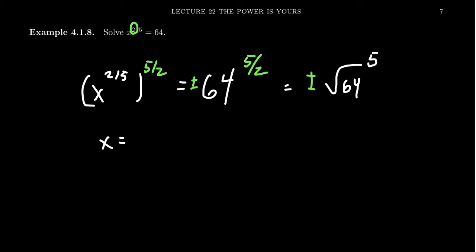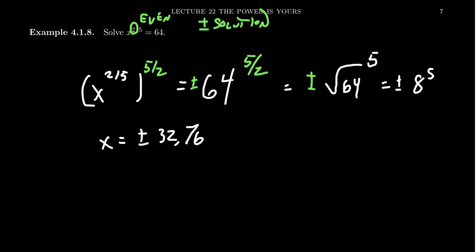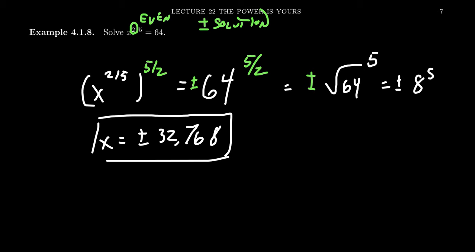If your numerator is even, you'll need a plus or minus with your solution because an even monomial is a two-to-one function. The square root of 64 is 8, so we take plus or minus 8 to the fifth. Eight to the fifth is 32,768, giving two solutions: x = +32,768 and x = -32,768.